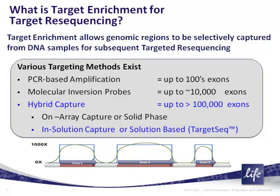The only technology that allows you to look at a whole exome — commonly larger than 200,000 exons — is hybridization-based. Within hybrid capture technologies, there are on-array technologies where capture probes are fixed to a solid phase such as a glass slide. More frequently, the best technology is in-solution capture, where hybridization probes are typically biotinylated, hybridization is done in solution, and hybrid products are pulled out through the biotin moiety. That is the basis for TargetSeq technology.